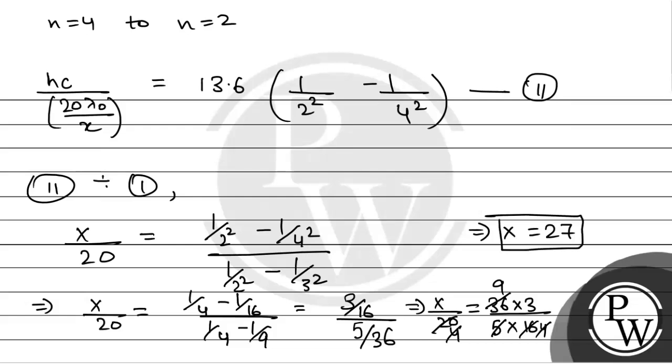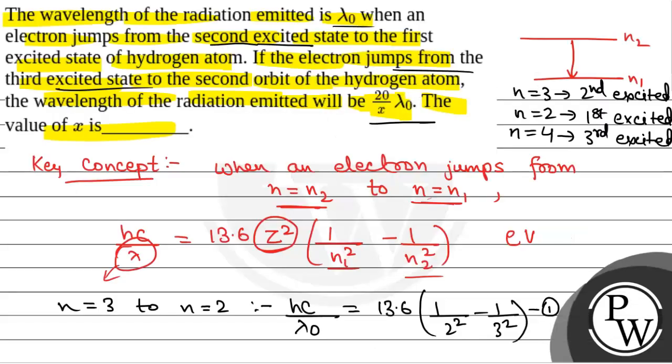So the value of x is 27. This is the final answer. Hope you all understood it well. Best of luck.